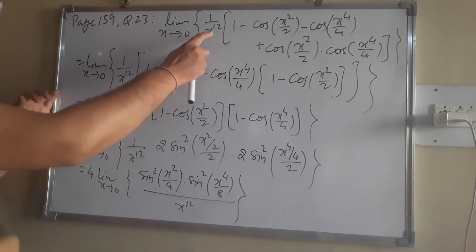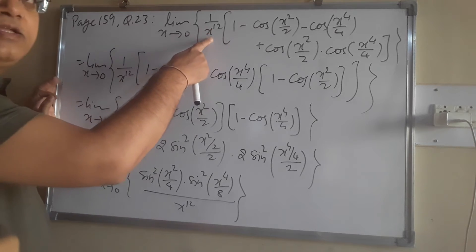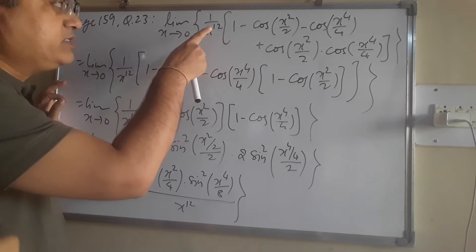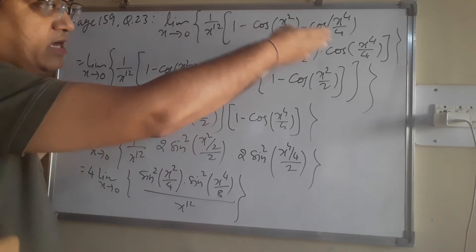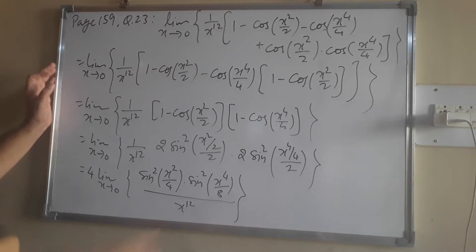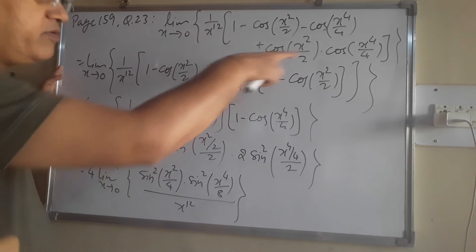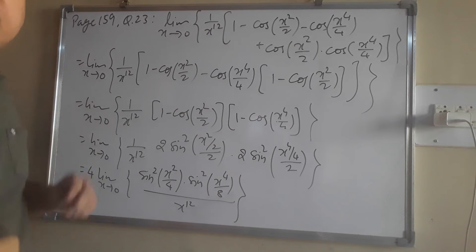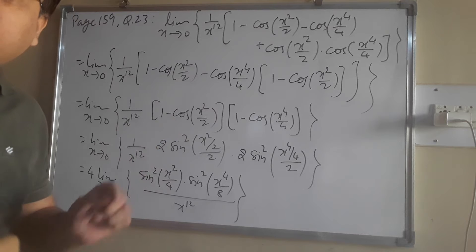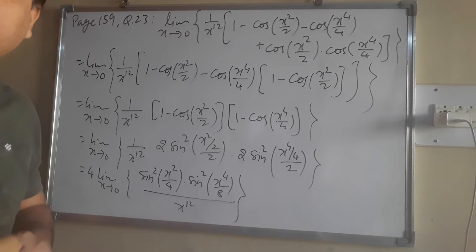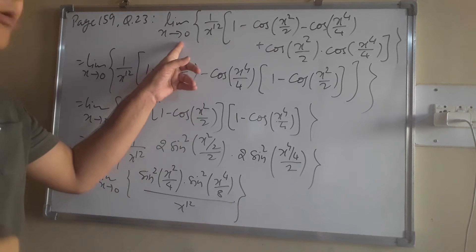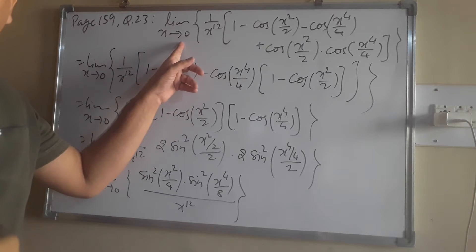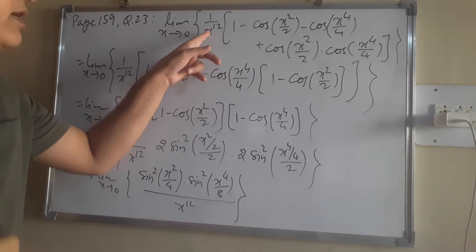Now this x power 12 is in the denominator. When x power is on the trigonometric function, this trigonometric function becomes adjusted. There will always be sin(theta) upon theta in the form. This problem happens because as x tends to 0 it becomes 1, but x power 12 in the denominator goes to infinity.